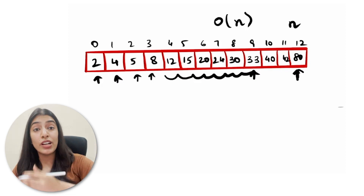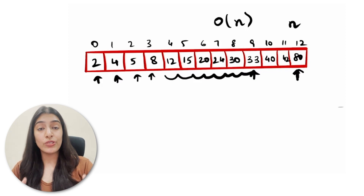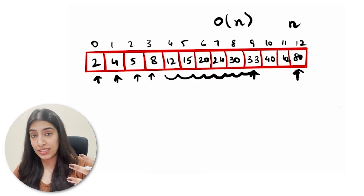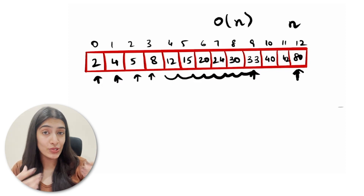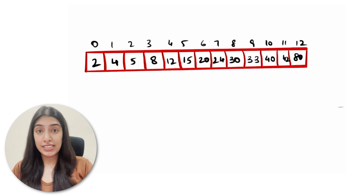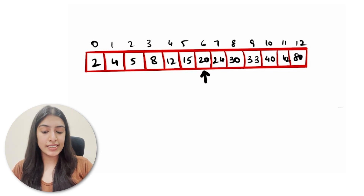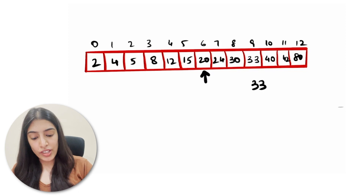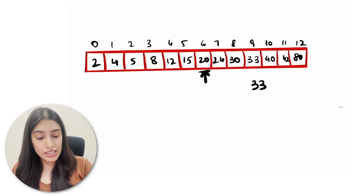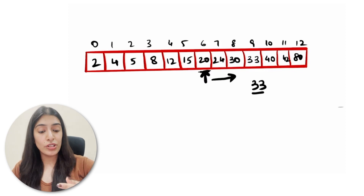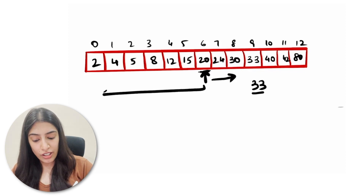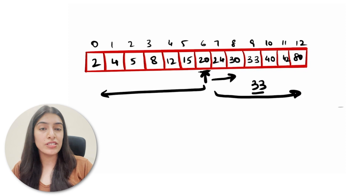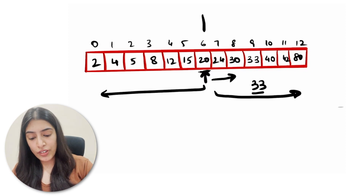This method of linearly going through all the elements to search for a particular element is called linear search. Now we are going to try to optimize this using binary search. To understand binary search, suppose we know that the number 20 exists at index 6. We have to find whether 33 exists. Since 33 is greater than 20 and the array is sorted, all numbers less than 20 are on the left and all numbers greater than 20 are on the right — so 33 must be on the right side.